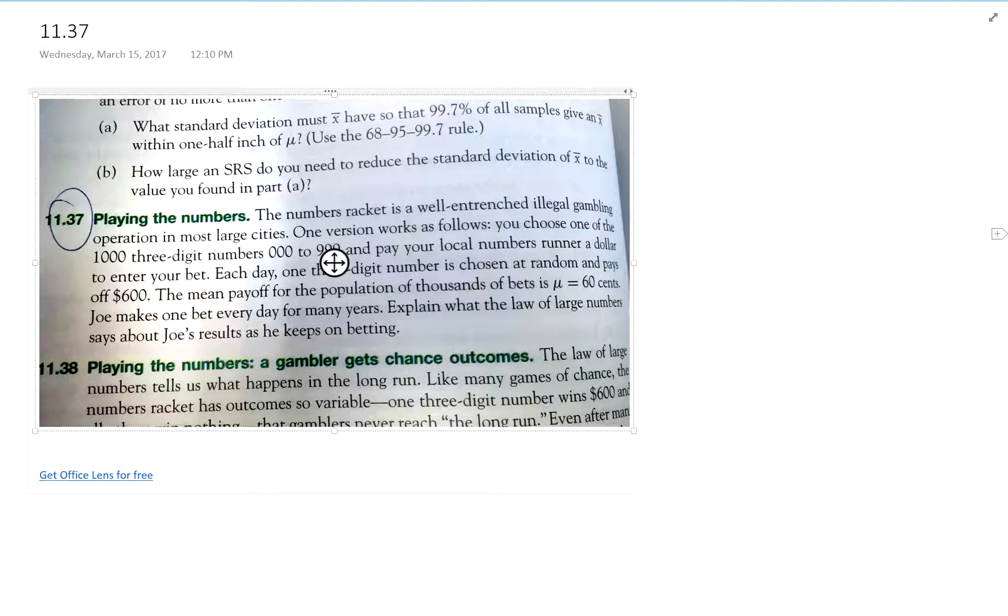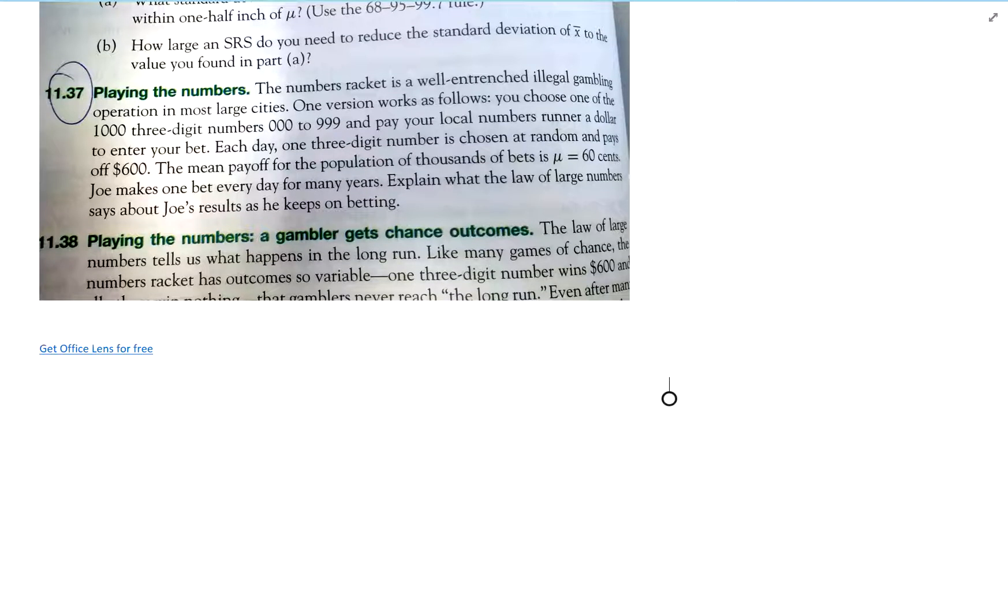There we go. Do the last one here. I'm at the 37. The number's racket is well entrenched in the middle of gambling in most large cities. One version works as follows. You choose one of a thousand three-digit numbers and pay your local numbers runner a dollar to enter your bet. Each day, one three-digit number is chosen at random and pays off $600. The mean pay off for the population of thousands of bets is mu equals $0.60. That's the average pay off.